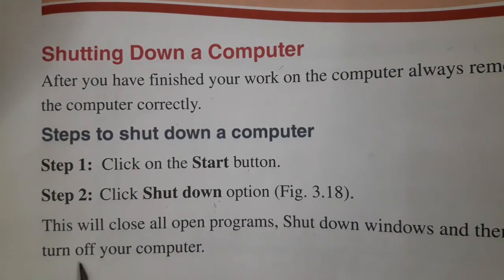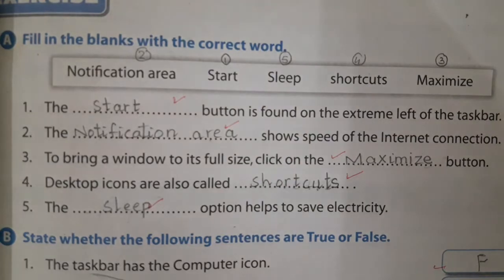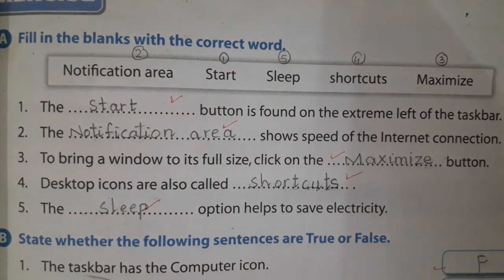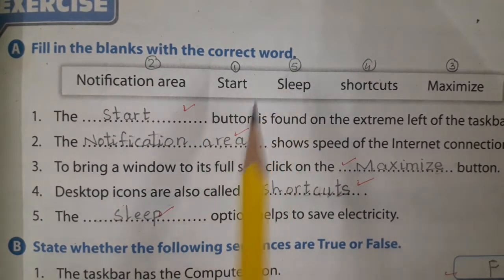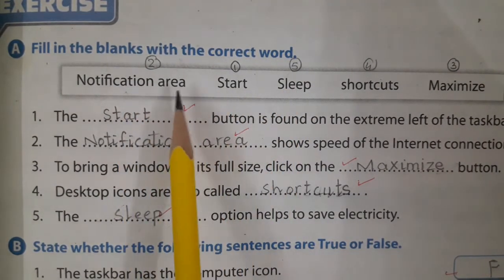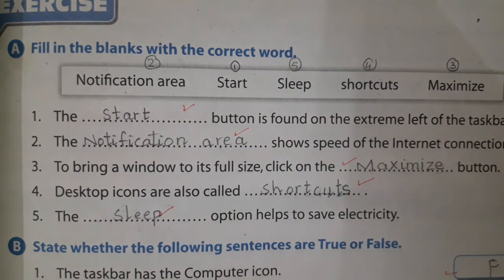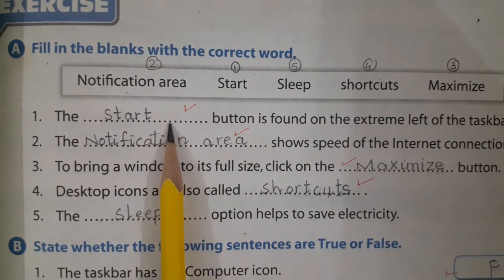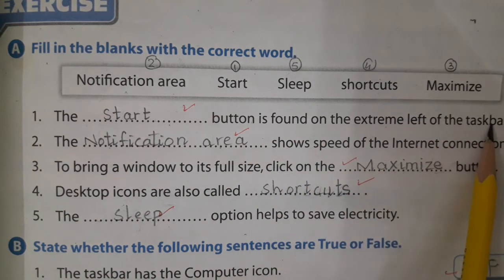Now open your book exercise, page number 39 — fill in the blanks with the correct word. The options given are: notification area, start, sleep, shortcuts, and maximize. Question one: the dash button is found on the extreme left of the taskbar.